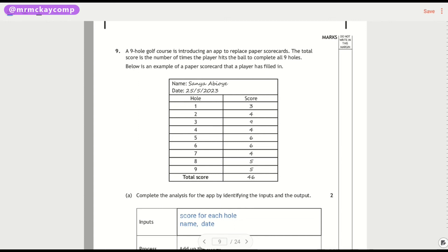Right, we've got a golf question here. Now, I can appreciate that this is the sort of thing some people will look at and think, oh, but I don't know anything about golf. That's not the point of the question. I don't know anything about golf, but we're given everything that we need in the description. So, a nine-hole golf course—you can see there we've got nine holes—is introducing an app to replace paper scorecards.